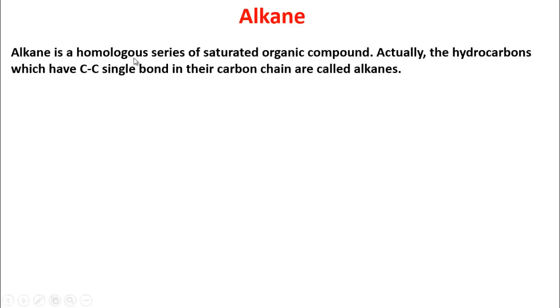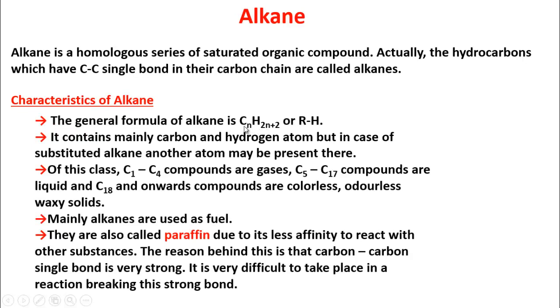Now you will know about alkane. Alkane is a homologous series of saturated organic compounds. The hydrocarbons which have carbon-carbon single bonds in their carbon chain are called alkanes. That means all the members of this homologous series contain carbon-carbon single bonds. The general formula of alkanes is CₙH₂ₙ₊₂, or RH where R is the alkyl radical — that means CₙH₂ₙ₊₁, except one hydrogen, and the residue part is also denoted by R. Alkanes contain mainly carbon and hydrogen atoms, but in the case of substituted alkanes, another atom may be present.